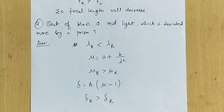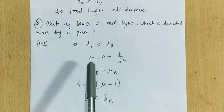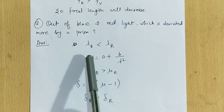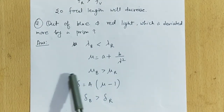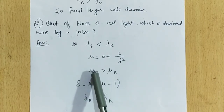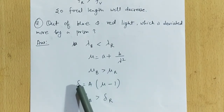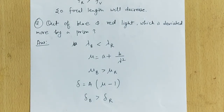Question 4: Out of blue and red light, which is deviated more by a prism? λ of blue is less than λ of red. By applying Cauchy's theorem, more λ means less μ, so μ of blue is more than μ of red. Using the deviation formula δ = A(μ − 1), since μ of blue is more, δ of blue is more than δ of red. Therefore blue light is deviated more by a prism.